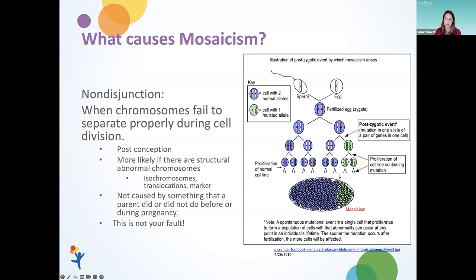How mosaicism translates throughout the body can really vary on how much of each cell type is present. It's more likely to happen when there's a structural abnormality in a chromosome, like an isochromosome, a translocated chromosome, or a marker chromosome. These chromosomes don't often participate in cell division as they should and are more likely to be lost, resulting in mosaicism throughout the individual. Importantly, this is not caused by anything an individual would do during pregnancy — this is not your fault. It's just a misdivision in the chromosomes and cell development.